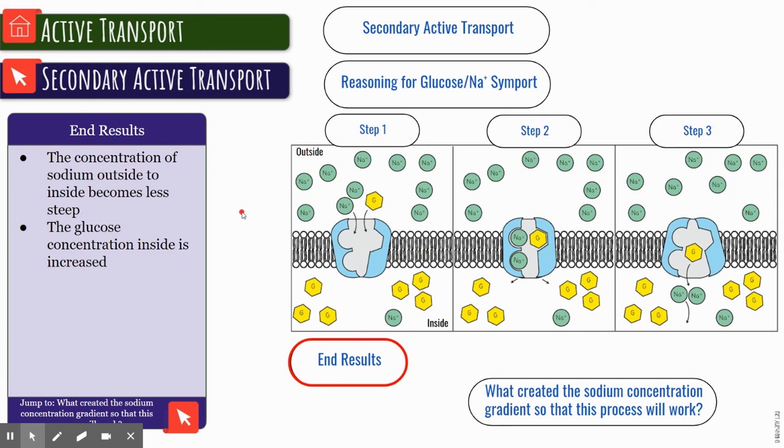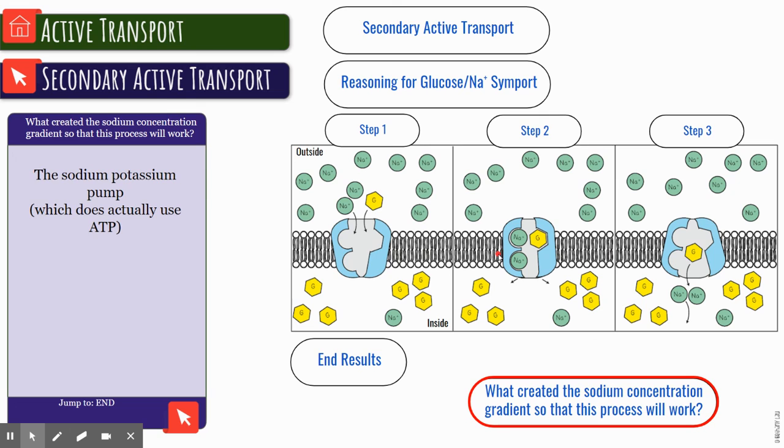The end result is we have sodium becomes less concentrated outside and the glucose becomes more concentrated on the inside. What created the sodium concentration gradient so this process could work? Well, that sodium potassium pump, and actually ATP does as well.